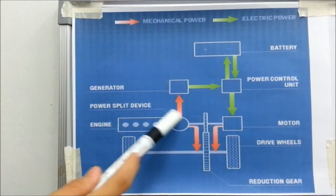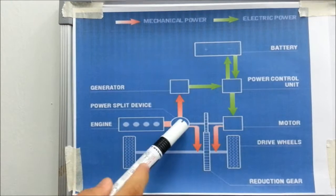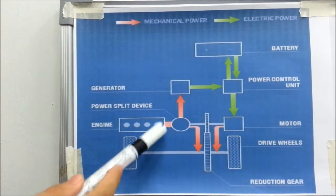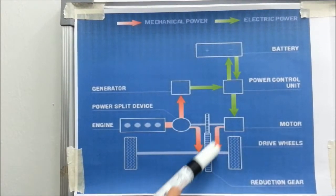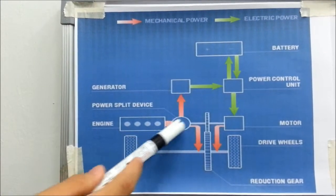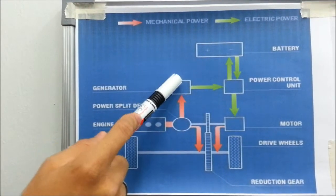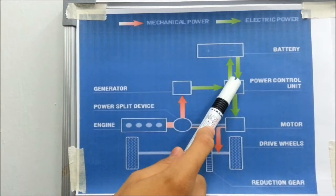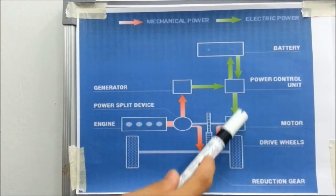The power split device transfers part of the power produced by the engine to drive the wheel, and the rest to the generator to either provide electric power for the electric motor or to recharge the battery.